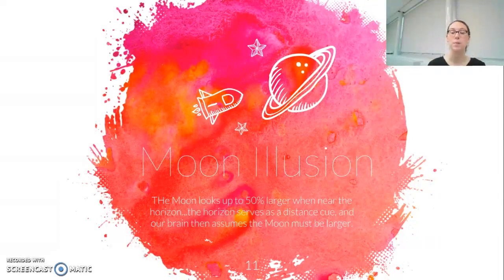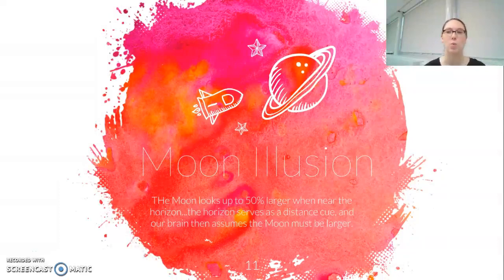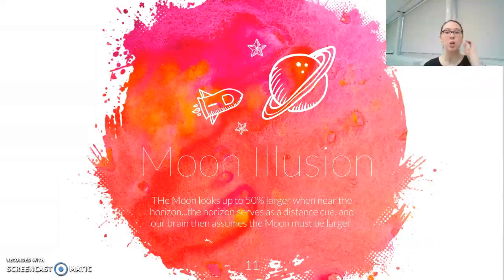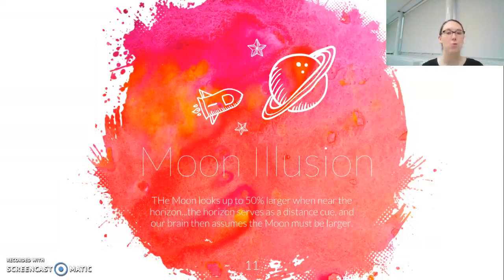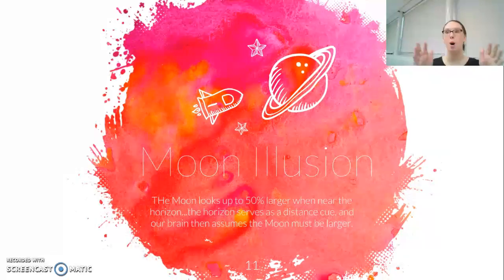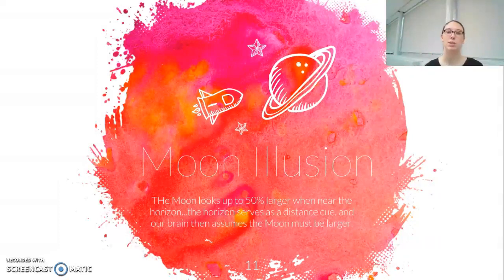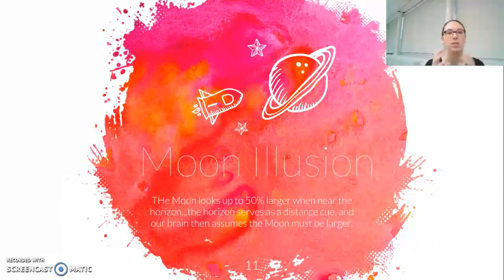The moon illusion is one of those examples. Even though we know rationally that the moon appears pretty much the same size no matter where it is in the sky, what we see doesn't match up with our cognitive understanding. The moon actually appears up to 50% larger when it's low on the horizon, as opposed to when it's really high in the sky. Researchers think the reason for that is because the horizon provides a depth cue. When we see the moon situated on the horizon, which appears so far away, we assume the moon must be massive because we're still able to see it at such a size. As the moon rises, it removes itself from those depth cues, and so we see it more true to what its size might be.